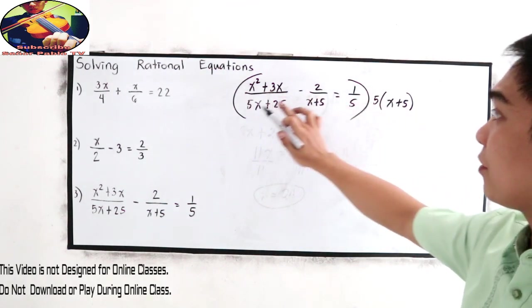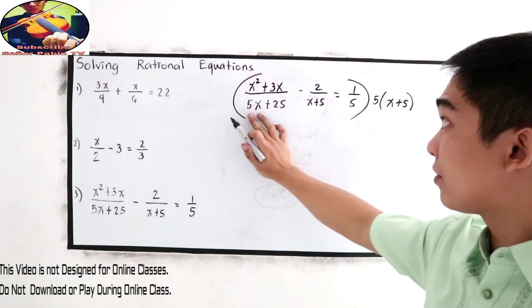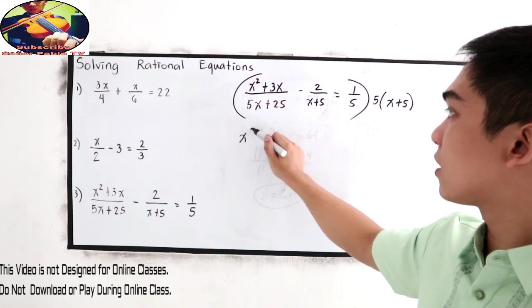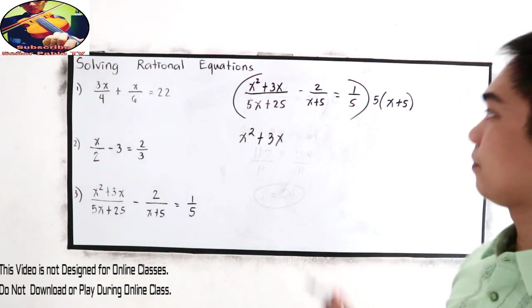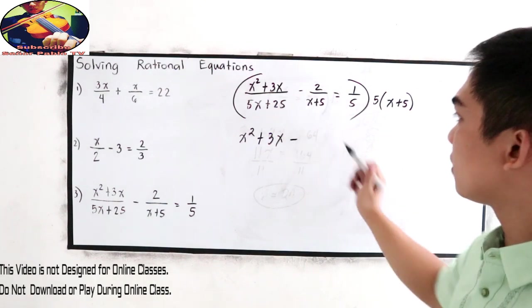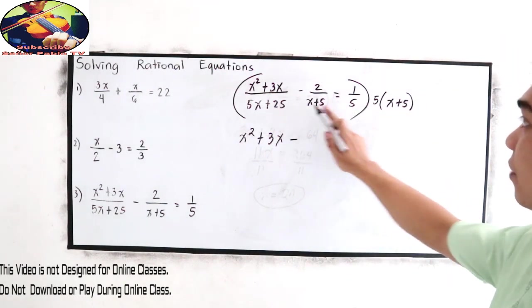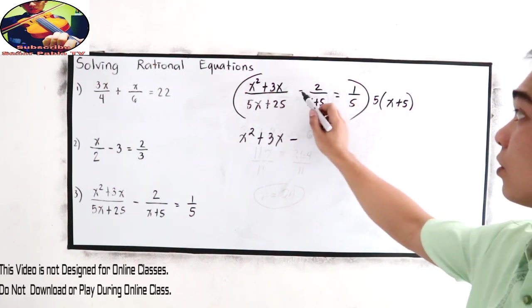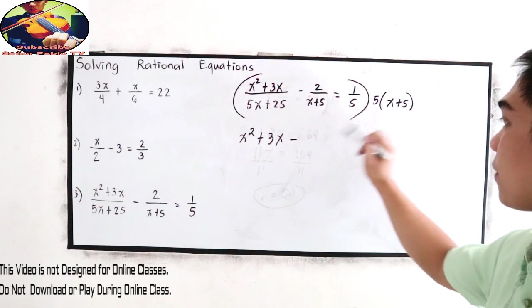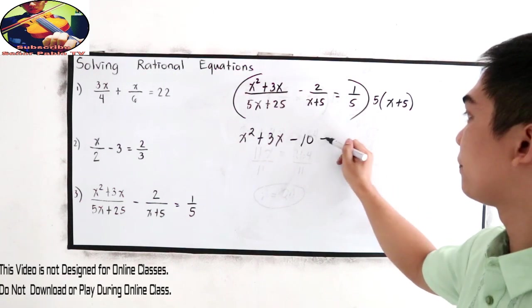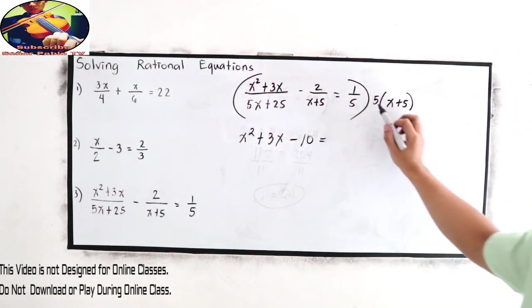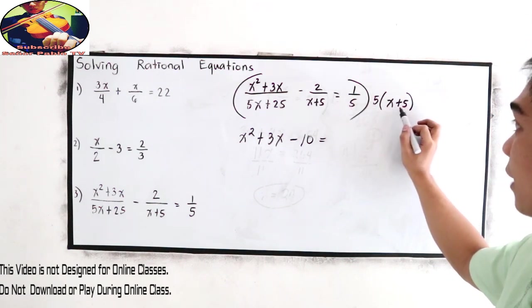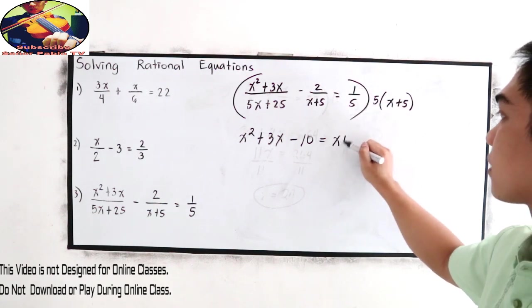Now 5x plus 25 divided by 5x plus 25, that is 1. So multiply the numerator, the remaining is x squared plus 3x minus 5 times x plus 5 divided by x plus 5. So x plus 5 will become cancelled out. So the remaining is negative 2 times 5, negative 10, is equal to 5 times x plus 5 divided by 5, that is x plus 5 times 1, x plus 5.